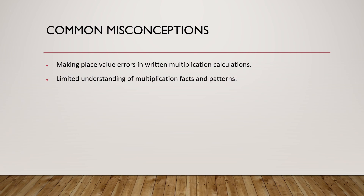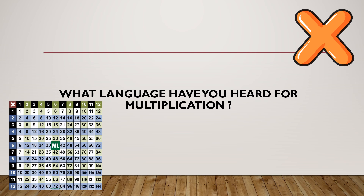The most common place where people lose marks in this topic are place value errors with written multiplication and not understanding multiplication facts and patterns. The language for multiplication — the words we're looking for are: multiply, times, lots of, groups of, and double, which is very specific for times by two.